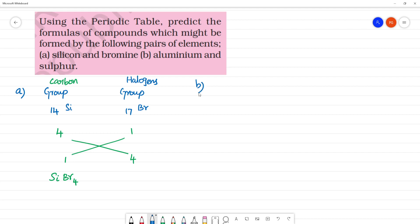Next is part B. What do we have? Aluminium. Aluminium is group 13. What is the group number? Group number is 13.